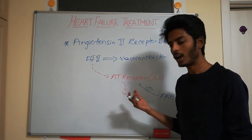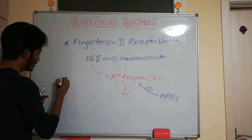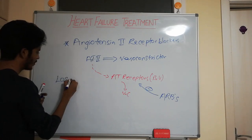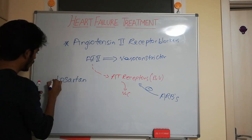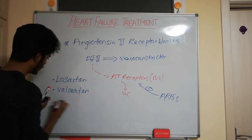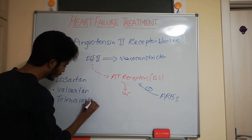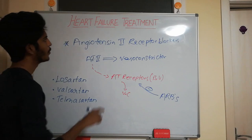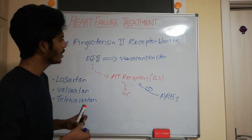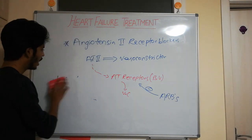The drugs which work as angiotensin 2 receptor blockers all end with '-sartan', such as losartan, valsartan, and telmisartan. These are the drugs used in the treatment of heart failure that work by blocking the angiotensin 2 receptors.